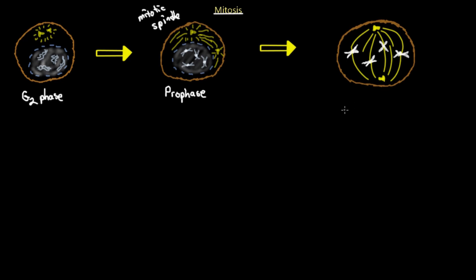The next stage in mitosis is pro metaphase. As soon as the nuclear envelope breaks down in prophase, that marks the beginning of pro metaphase. If you're asked on an exam what indicates the beginning of pro metaphase when looking through a light microscope, the answer is: as soon as the nuclear envelope has disintegrated, that is the sign of the beginning of pro metaphase.